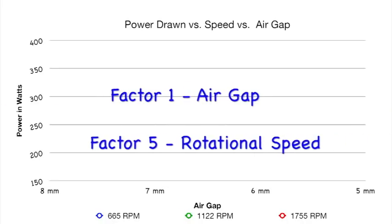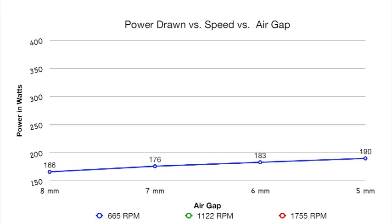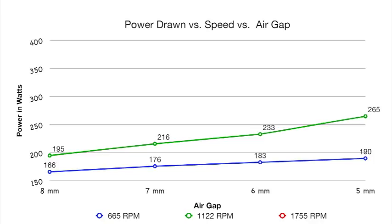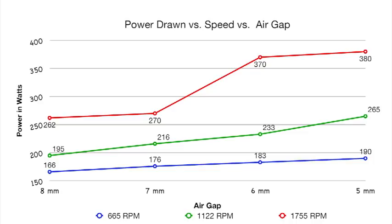Now our fourth factor: speed. Speed seriously affects how the eddy current effect works. We used a 2mm thick disc with 30 degree spacing and tested air gaps from 8mm down to 5mm only, because at higher speeds going closer seriously overloaded the motor. Three drill speeds were tested: 665 RPM, 1122 RPM, and 1755 RPM. Looking at power: at 665 RPM it goes from 166 to about 190 watts; at 1122 RPM it goes from 195 at 8mm to 265 watts; and at 1755 RPM it started at 262 — where the 1122 ended — and went up to 380 watts.